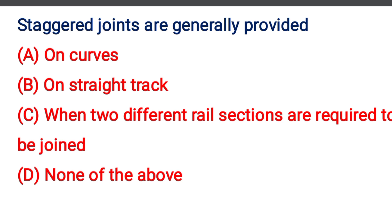Next question: Staggered joints are generally provided — Option A: on Curves, Option B: on Straight Track, Option C: when two different rail sections are required to be joined, Option D: None of the above. The correct answer is Option A: on Curves.